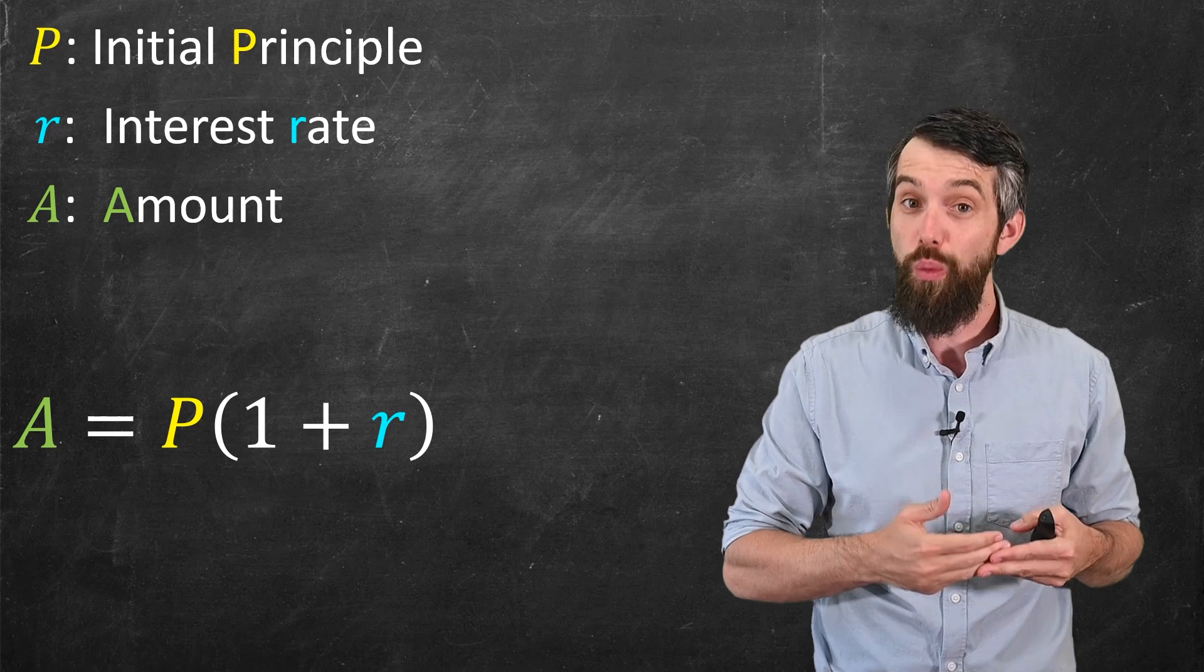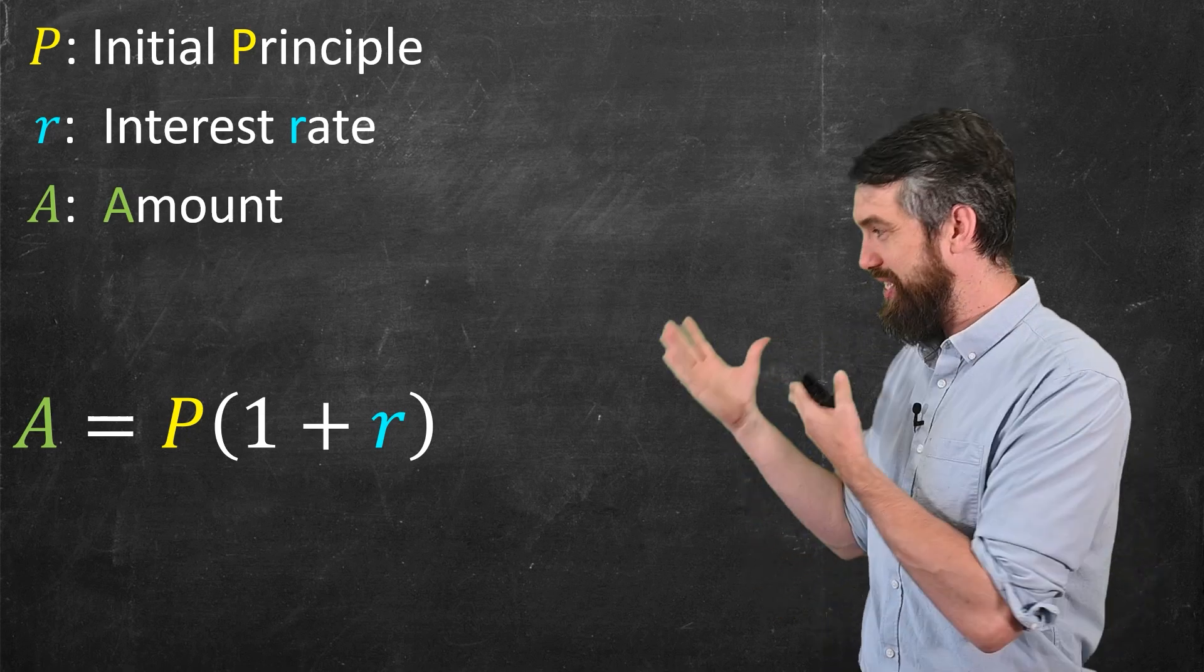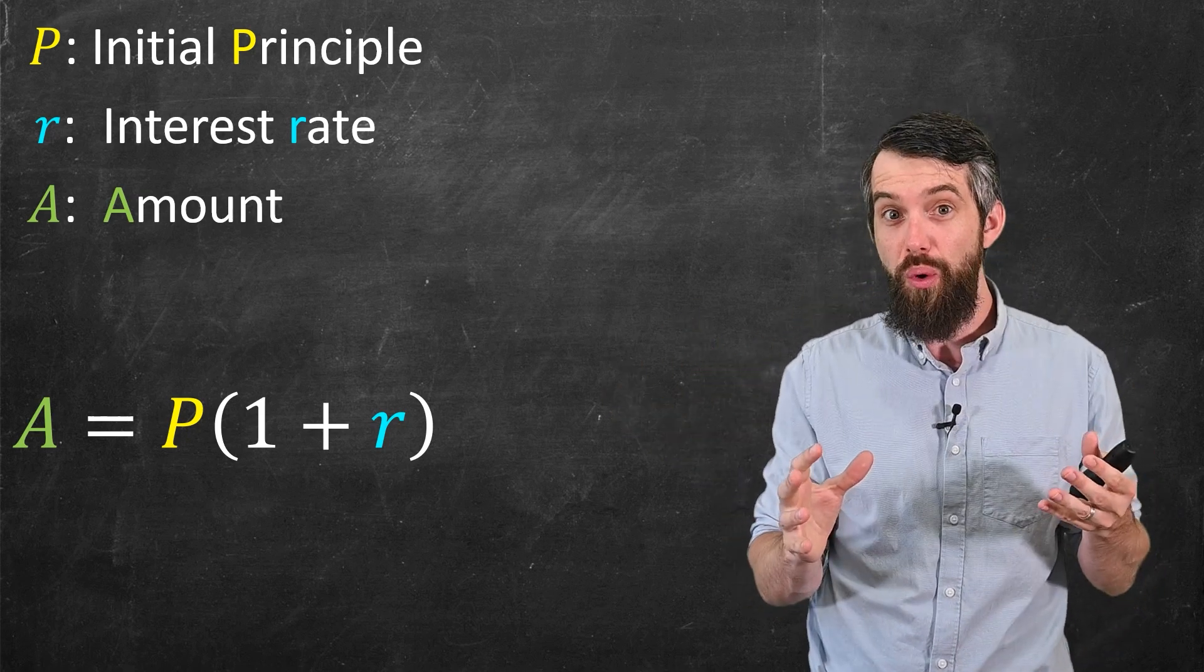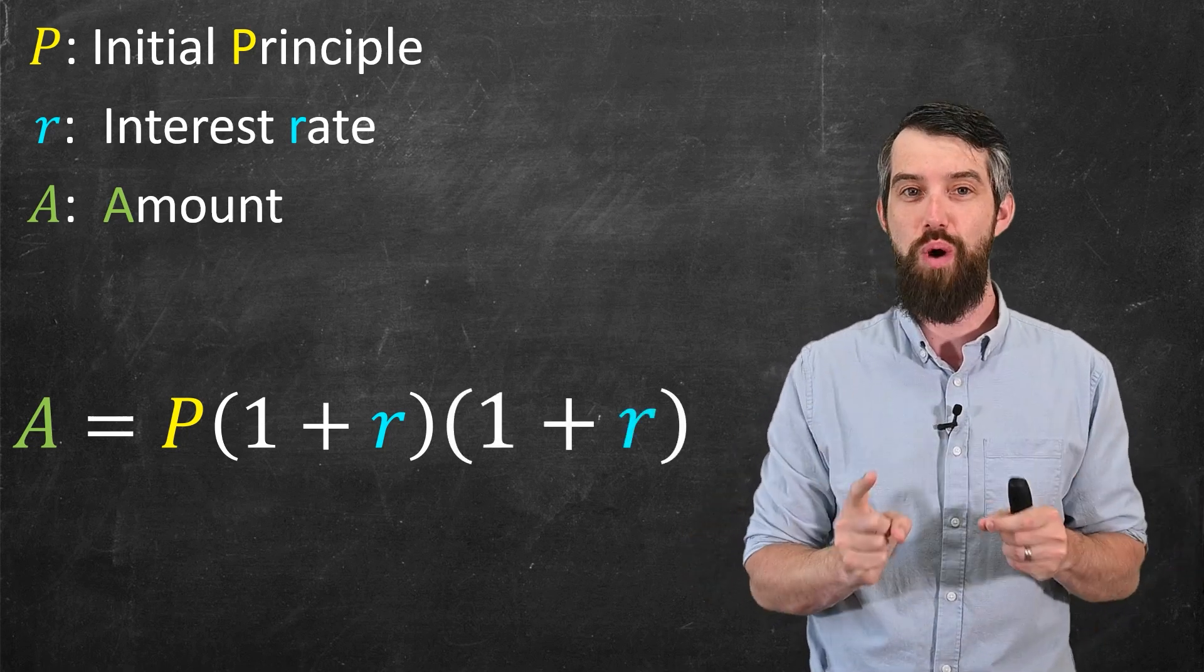Okay, now imagine I go forward not one, but two periods into the future. Well, one period in the future is this, but two periods in the future, that's how much you owe, and then I need to apply interest to it. In other words, I would multiply by another factor of 1 plus R.